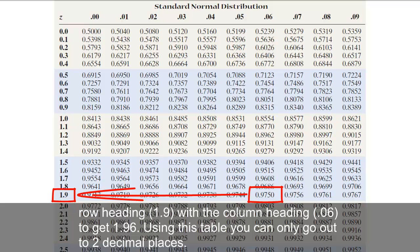Then combine the row heading, 1.9, with the column heading, 0.06, to get 1.96.